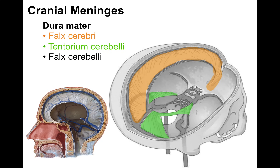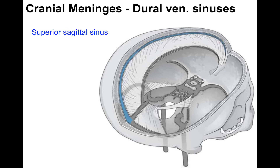The dura mater has three compartmental folds to support the brain. The falx cerebri (orange) is in a vertical plane and separates the right and left cerebral hemispheres. The tentorium cerebelli (lime green) is horizontal and separates the cerebrum from the cerebellum. The falx cerebelli separates both cerebellar hemispheres. The superior sagittal sinus courses on the very top of the falx cerebri from front to back, and the inferior sagittal sinus courses on the bottom of the falx cerebri from front to back.